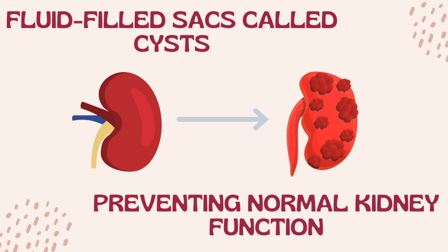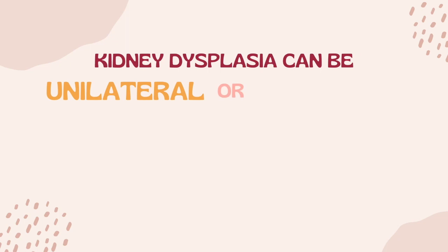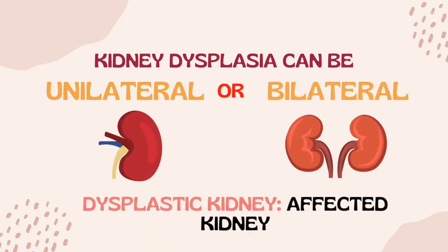As a result, kidney function can deteriorate before or after birth. Kidney dysplasia can either be unilateral or bilateral, and an affected kidney is called a dysplastic kidney.